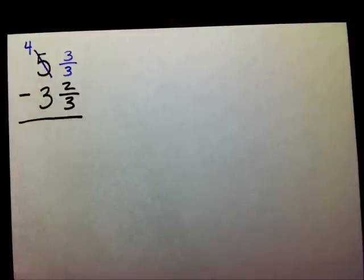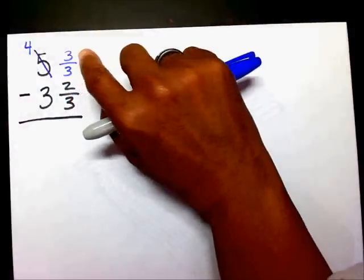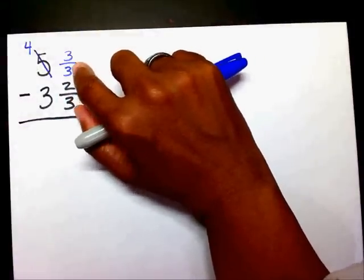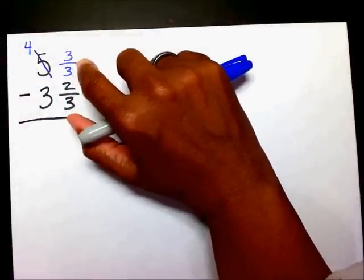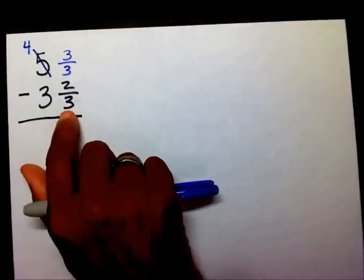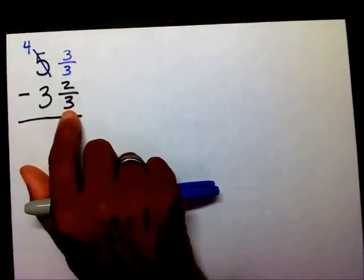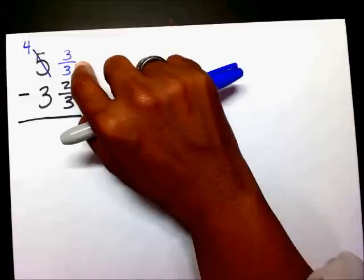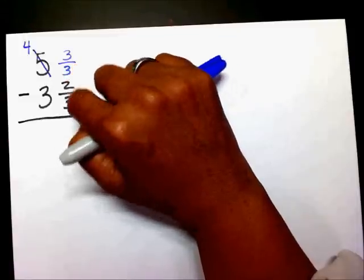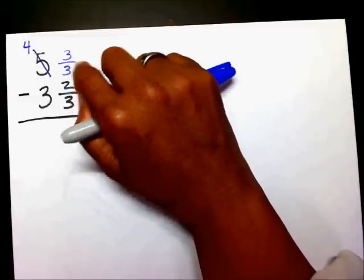And the reason why I picked 3/3, and not 5/5, or 4/4, or 10/10, is because my denominator is three. Since my denominator is three, I'm going to choose 3/3. That way, I'll already have my like denominators.